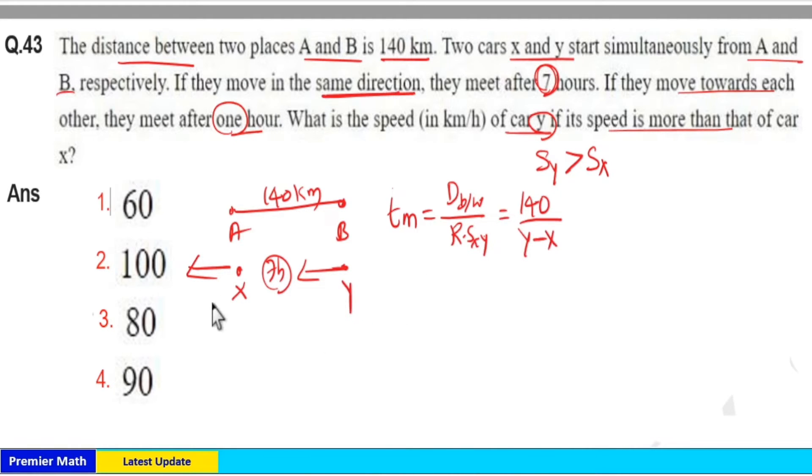When they move in the same direction, the relative speed is Y minus X. Setting this equal to 7 hours: 140 divided by Y minus X equals 7. From this, Y minus X equals 20.